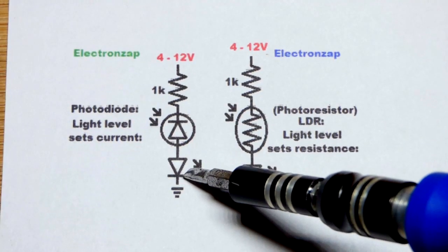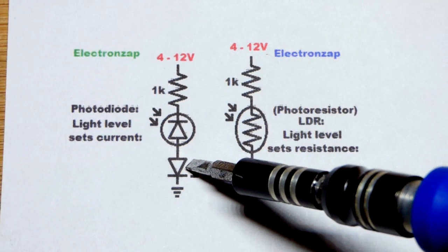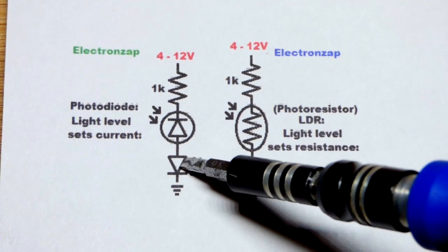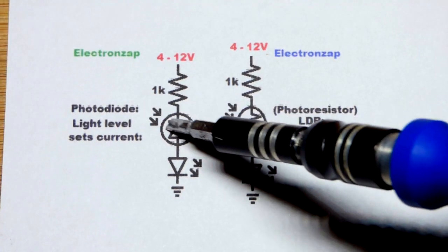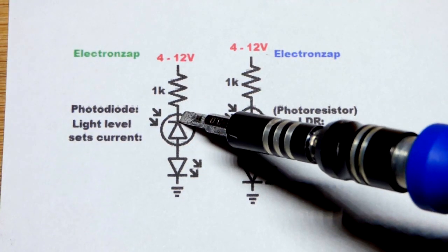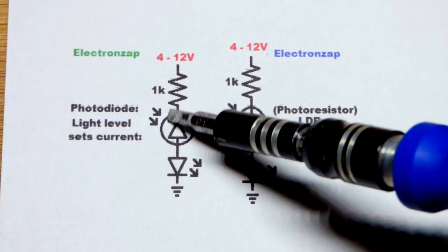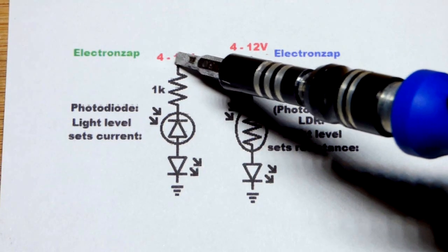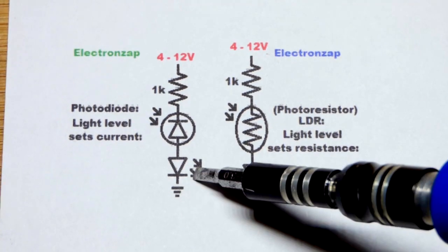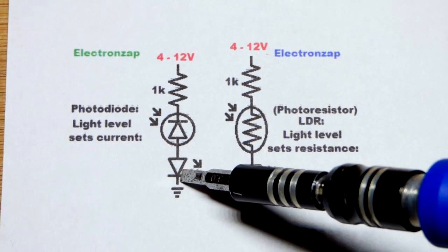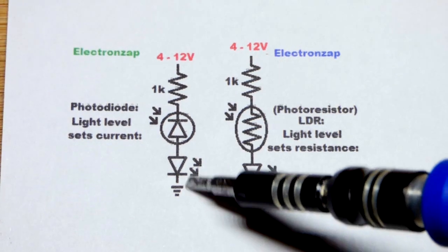As you can see, it's a diode like the LED that we're going to compare it to. The arrows are pointing the opposite way though. The LED emits light, whereas light falls on the photodiode to make it work. You use the photodiode reverse biased. So you put the cathode to the more positive side of the circuit, the anode towards the more negative side, which is the opposite of the LED.